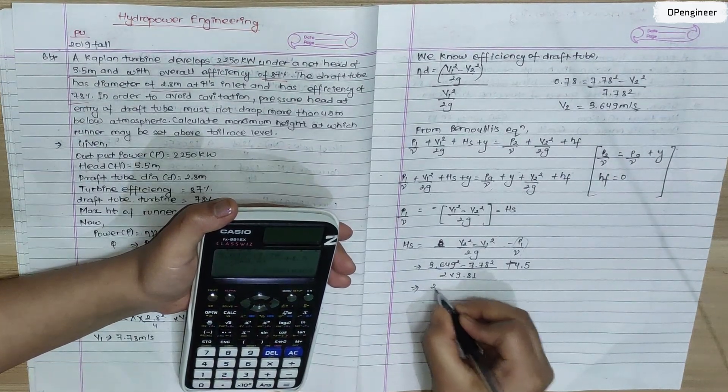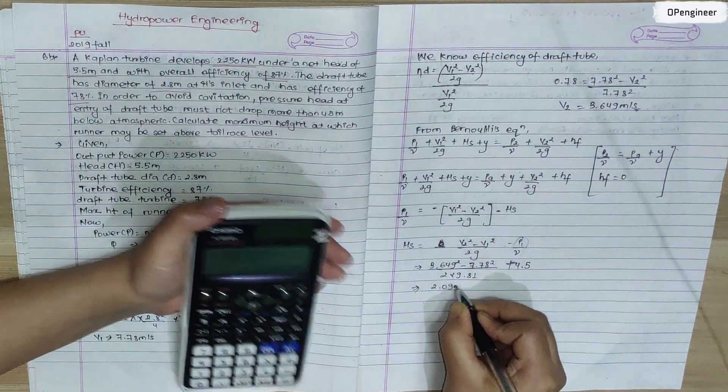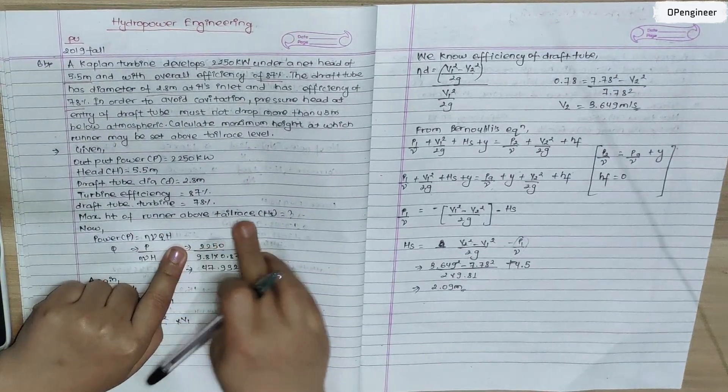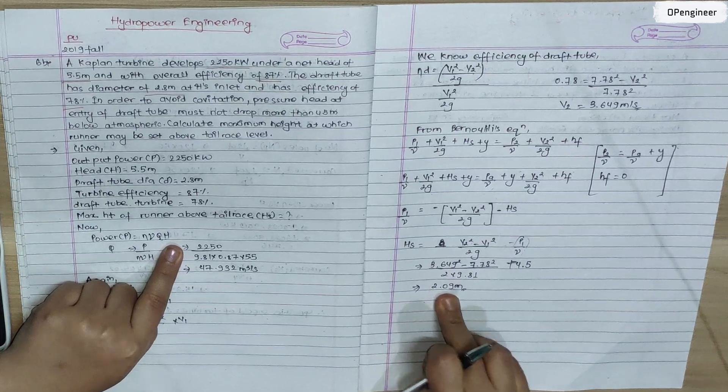Therefore, the maximum height of the runner above the tailrace is 2.09 meters.